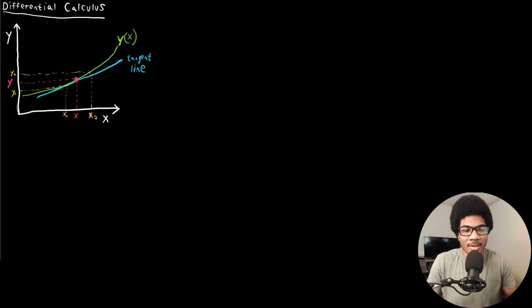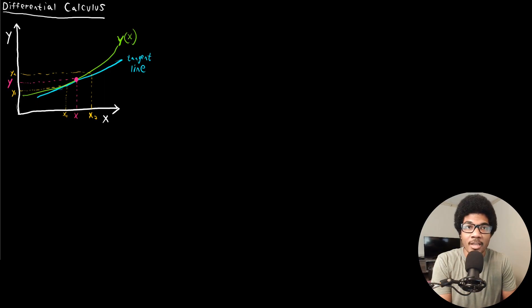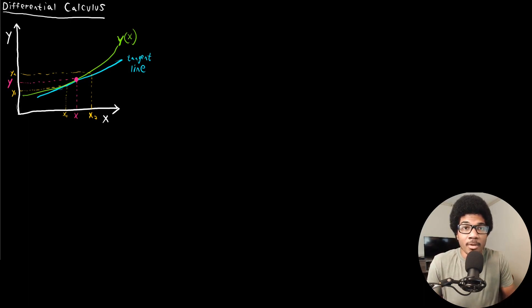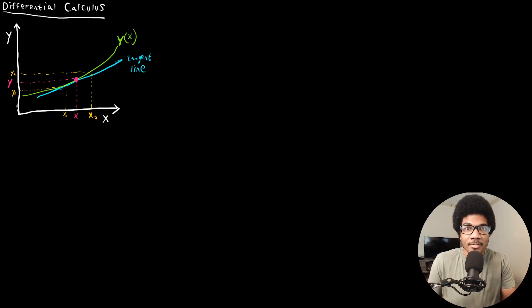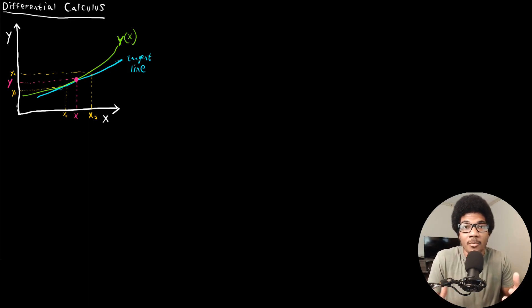Why do we care about this in physical chemistry? Physical chemistry is very much interested in the extent to which certain properties change with respect to other properties. For example, how does a change in temperature affect the pressure of a system? How does a change in temperature affect the volume, or the density? All of these properties are going to be functions of certain variables, and one of the questions we'll constantly be asking is how does this thermodynamic or state property change with respect to changes in other variables?